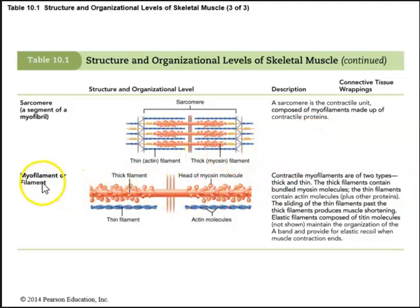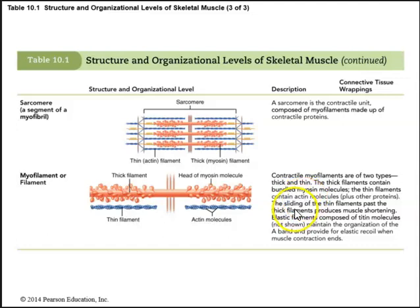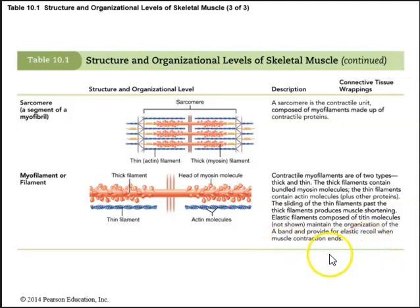Looking at the myofilaments, we have thick filaments held by the M-line, the H-band where there are no thin filaments, and overlapping thin actin filaments. There are two types of myofilaments — thick and thin. Thick filaments have bundled myosin; thin filaments have bundled actin. The sliding of thin filaments past thick filaments produces muscle shortening or contraction. We also have elastic filaments composed of titin molecules that maintain the organization of the A-band and provide elastic recoil when muscle contraction ends.